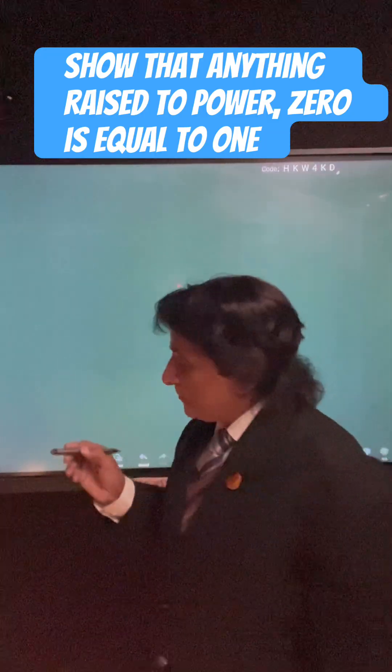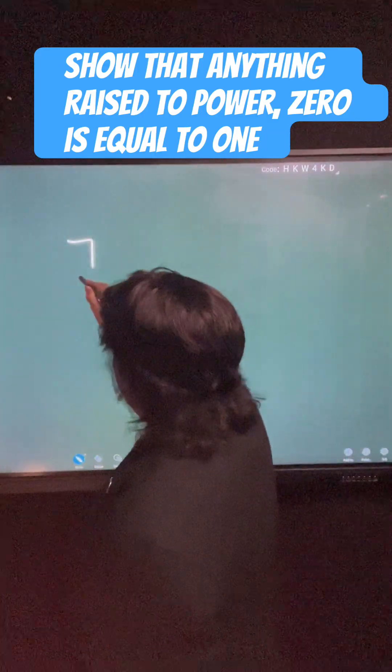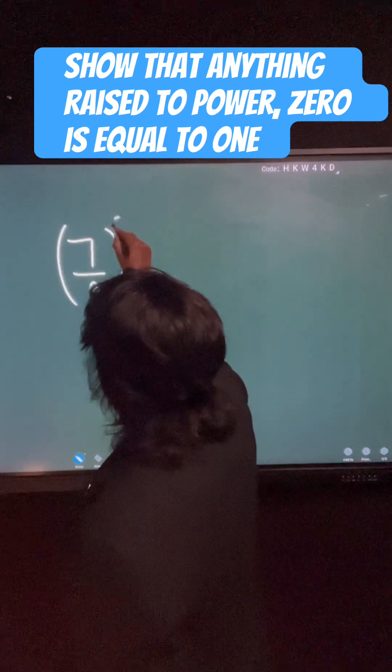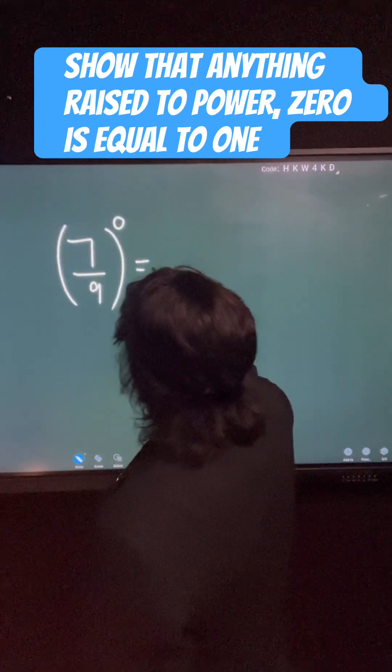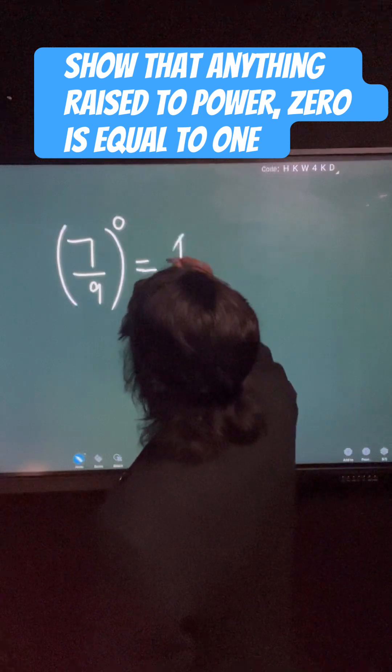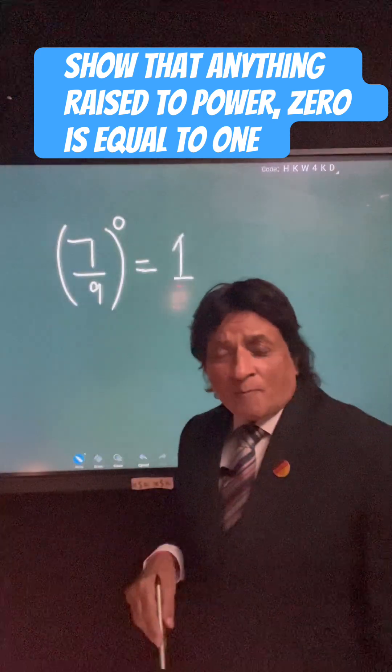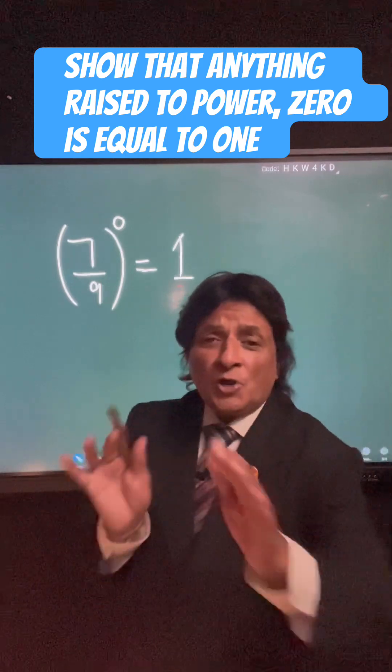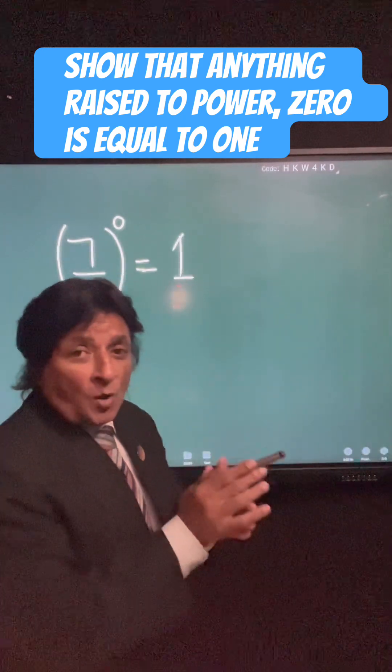Dear students, how 7 upon 9 to the power 0 is equal to 1, or I am going to tell anything raised to power 0 is equal to 1. How is it possible?